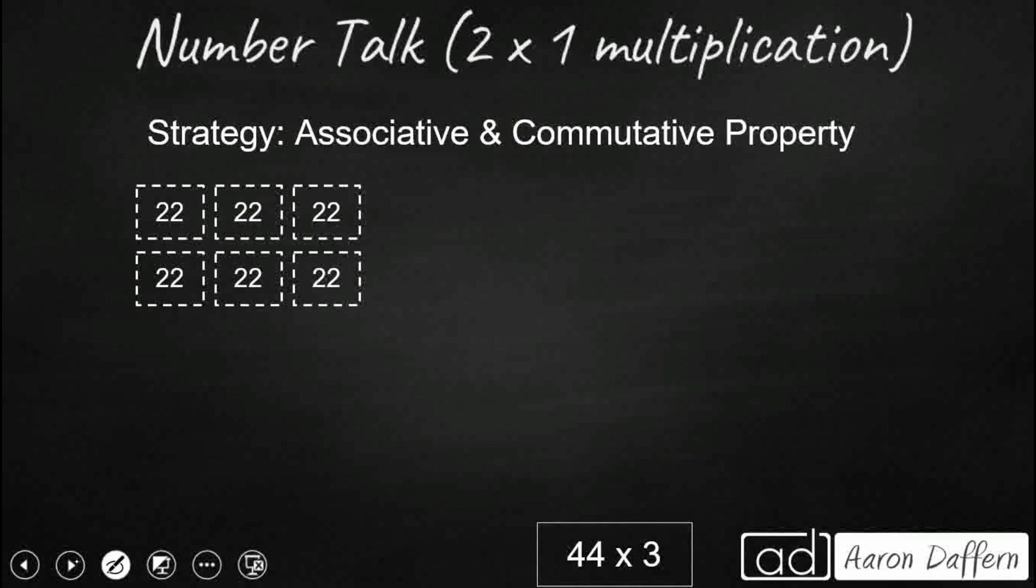Final way we can use it is the associative and the commutative property. Let's take this 44 times 3. Now 3 is a prime number, so we can't break that down. Really, we're just going to break down that 44 a different way. Last time we did 11 times 4. Now we're going to do two groups of 22. We've got two groups of 22, and I'm going to write it right here. We're going to shift those parentheses.